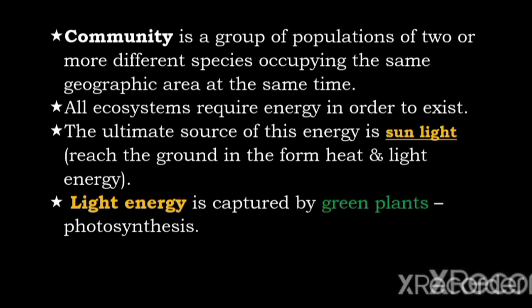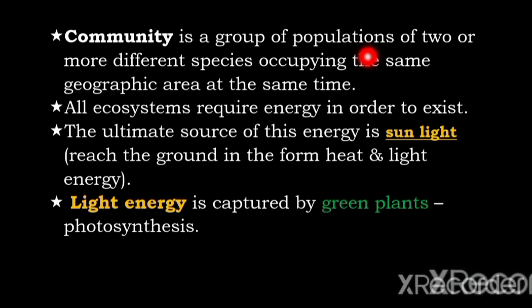Ecosystem is the interaction between biotic and abiotic things. Community is a group of populations of two or more different species occupying the same geographic area at the same time. So a community is a group of populations — lions, hyenas, gazelles, snakes, hippopotamuses, buffaloes, and so on. Generally those populations together are called a community.